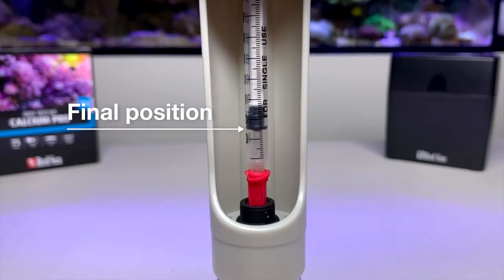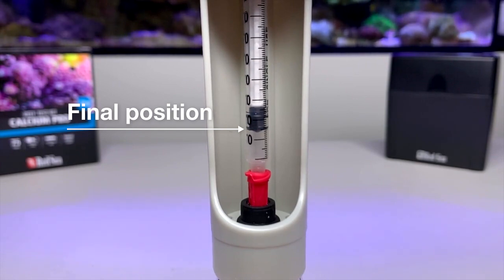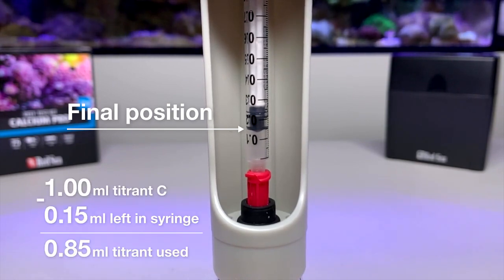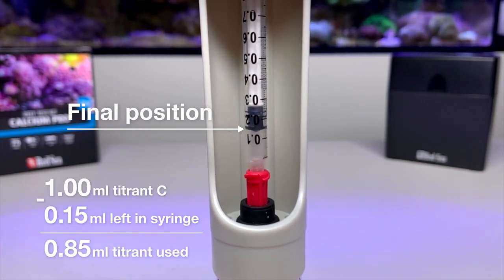Now let's take the reading. When we look at the syringe, we can see that we have used up 0.85 ml of the titrant C.